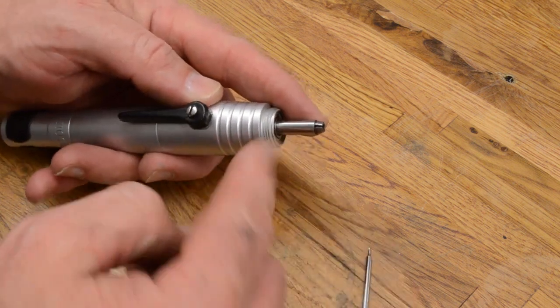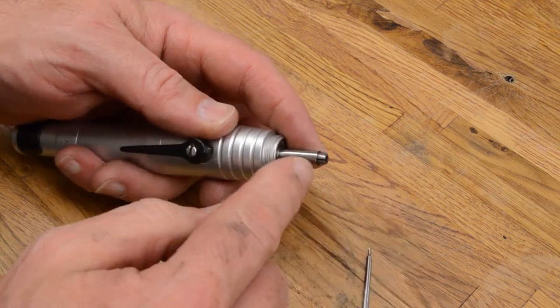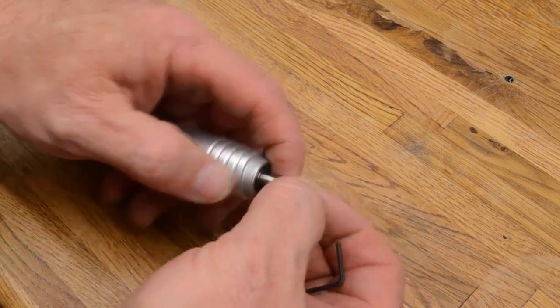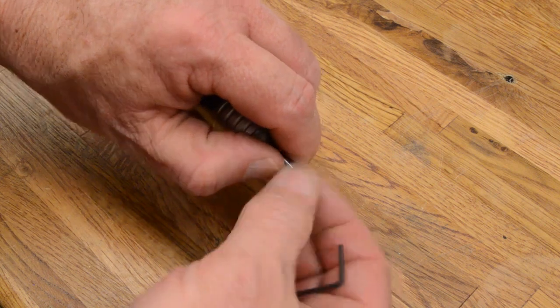I'm going to take this collet apart. Since it's already loose, all I have to do is grab ahold of the collet and spin it out.